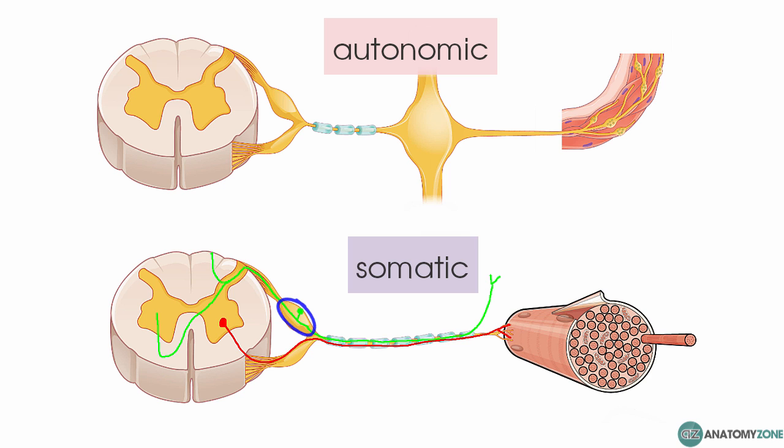The key here is that there is one single neuron in the efferent component of the somatic nervous system, which extends from the central nervous system to the periphery.